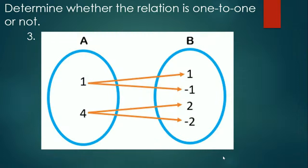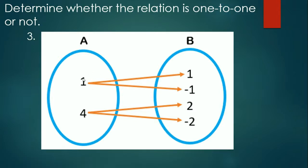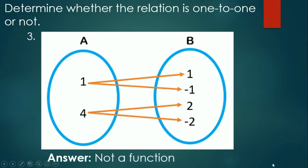Third item: 1 is paired to two elements of B — which are 1 and negative 1. 4 is paired to two elements of B — which are 2 and negative 2. From our previous lessons, when more than one arrow comes from an element of A in a mapping diagram, that means it is not a function. Definitely not a function, and therefore not one-to-one.